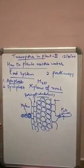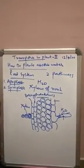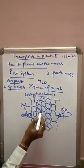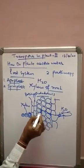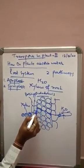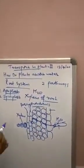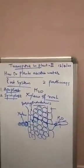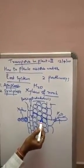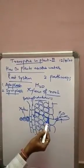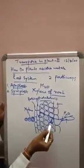Apoplast simply means non-living continuity, and symplast means living continuity. The movement of water from one cell to another, finally reaching the xylem through non-living continuity — that is, through intercellular spaces and the cell wall — is the apoplast pathway. There is no obstruction for the flow of water as non-living continuity is involved, so there will be bulk flow or mass flow of water from the root hair to the xylem along the water potential gradient.